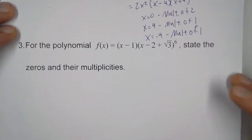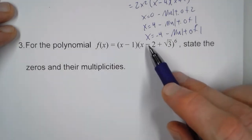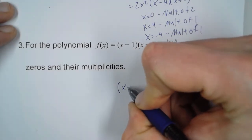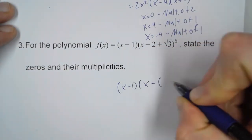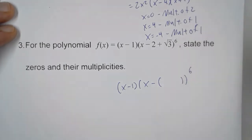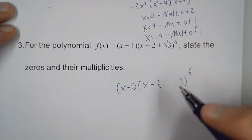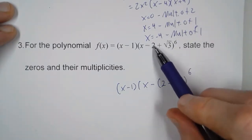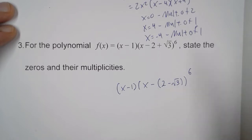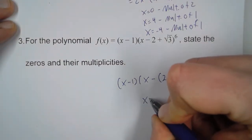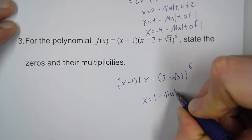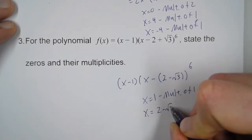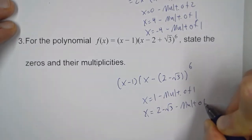Number three. This is in factored form, but we've got this weird two plus radical three. We need to rewrite this because we want it as x minus a quantity. Now it is to the sixth, but we'll get to that. What's inside the parentheses? It has to be two minus radical three, because that negative distributes in — it's going to apply to both terms. So x equals one is a zero with a multiplicity of one, and x equals two minus radical three has a multiplicity of six.